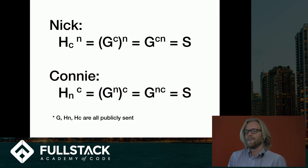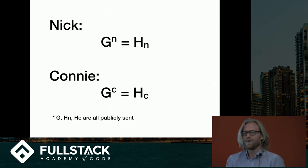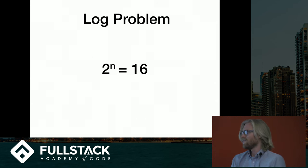Problem solved, right? Right. No. The problem is this thing right here. G and H were exchanged over the internet. If anybody intercepted those two numbers, it would be trivial to figure out what N is. You could get Nick's key super easily, and then once you have Nick's key, you can figure out what the shared secret is, and then the whole encryption scheme falls apart. Getting this N would be as easy as solving this problem.